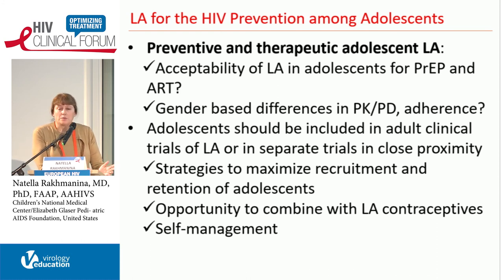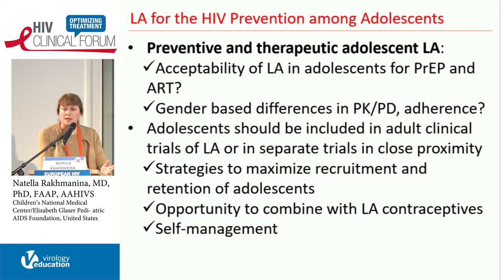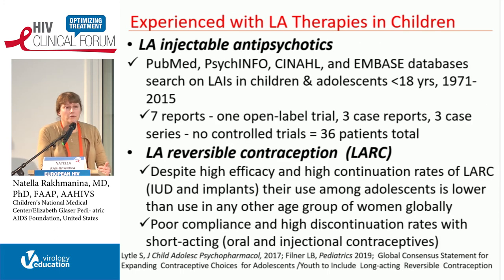In conclusion for adolescents: acceptability studies really need to happen. Will there be gender differences in PKPD? We don't know. Adolescents should be included in adult clinical trials or separate trials, but they are difficult to retain — there need to be real strategies for enrolling and retaining them. For females particularly, this presents an incredible opportunity to combine HIV prevention with long-acting contraception. I also want to raise the potential for self-management, because adolescents are private people, they don't like coming to clinics, and this population will be particularly interesting for self-injection and other approaches to PrEP.